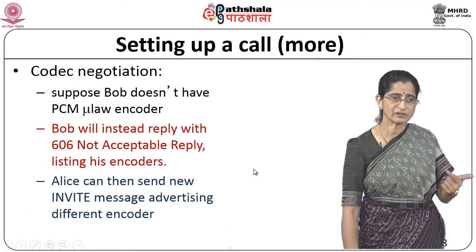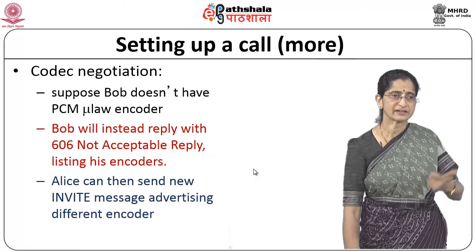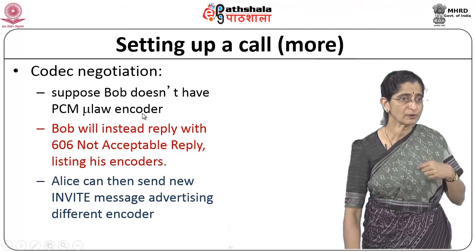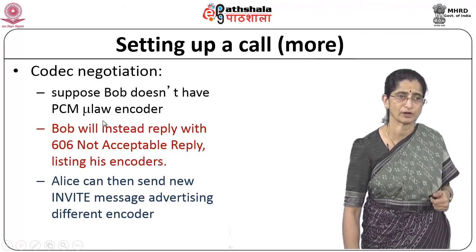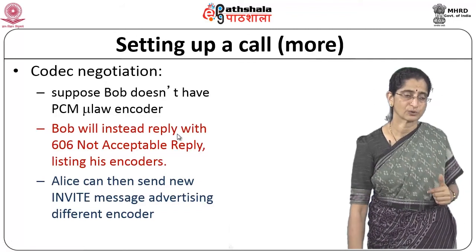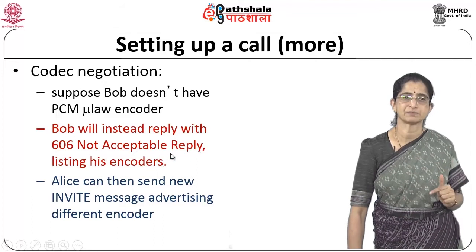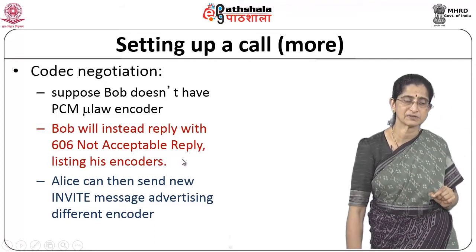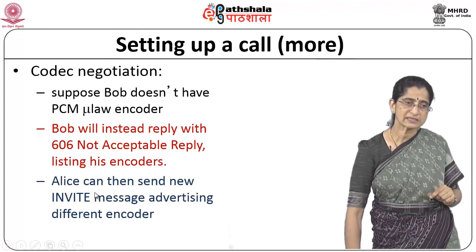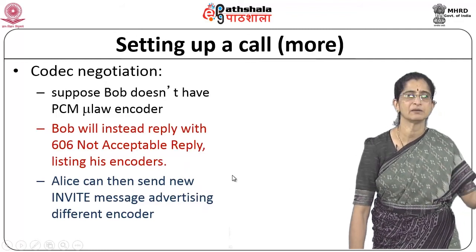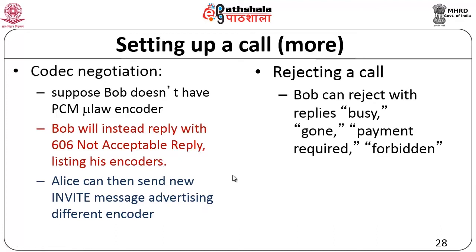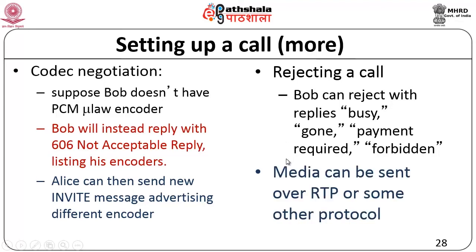If codec negotiation is needed — for example, if Bob does not have a PCM U-law encoder — he sends a 606 Not Acceptable reply, listing which encoders are acceptable to him. Alice can then send a new INVITE advertising a different encoder, completing the call. Bob can also reject the call for other reasons such as busy, gone, payment required, or forbidden. If the call is completed, media is sent over RTP or another protocol.